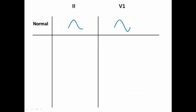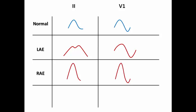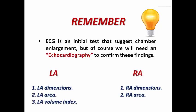To summarize: in lead 2 and V1, left atrial enlargement increases P wave duration with prominent negative component in V1. Right atrial enlargement increases P wave amplitude in both lead 2 and V1. Biatrial enlargement increases both duration and amplitude in lead 2 and V1. Remember, the ECG is the initial test that suggests chamber enlargement, but echocardiography is needed to confirm — measuring left atrial dimensions, area, and volume index, and right atrial dimension and area.